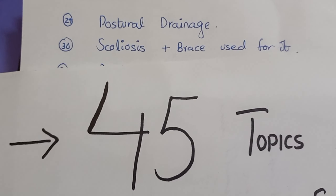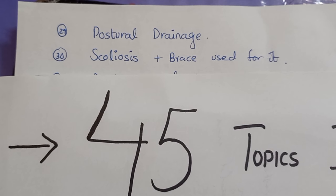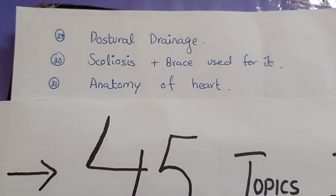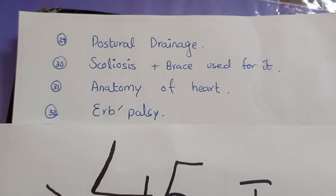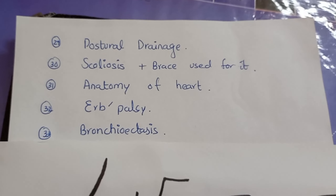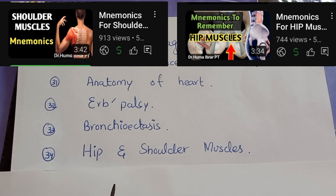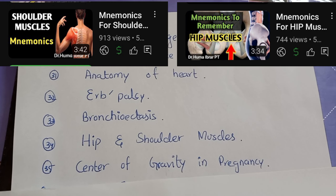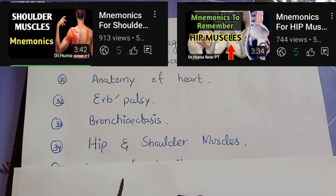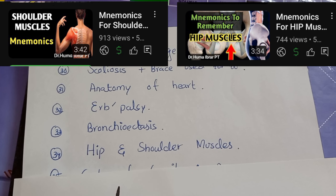Questions about postural drainage, scoliosis and braces used in scoliosis, questions about anatomy of the heart, and bronchitis are also important. Number thirty-four is about hip and shoulder muscles. A mnemonic video about hip and shoulder muscles is also available on my YouTube channel and the link is given in the description box, kindly check it out.